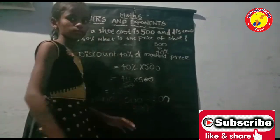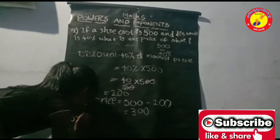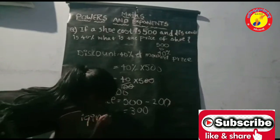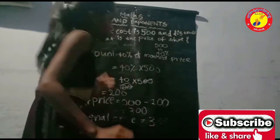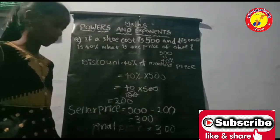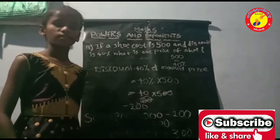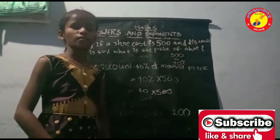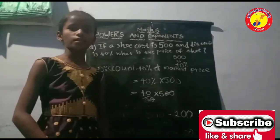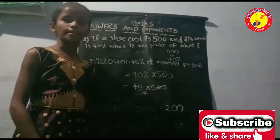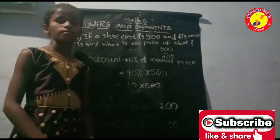The answer is 300. The original selling price of the shoe is 300. You can try other discount problems as well. I want to share a quotation about mathematics by Albert Einstein: 'Pure mathematics is the poetry of logical ideas.' It means to solve problems, we should think logically.